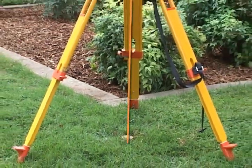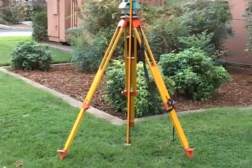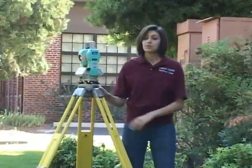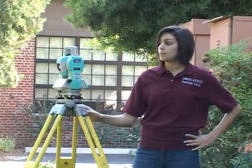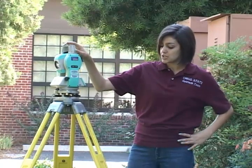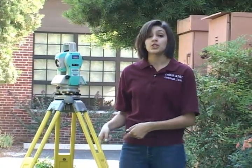To get started, plumb and level the total station directly over the survey monument point. I'm going to demonstrate how to get a vertical angle using the total station. We have the total station set up over a control point with a known elevation.